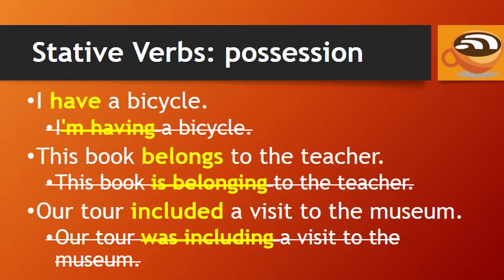Here are some examples of stative verbs with possession. You can say 'I have a bicycle,' but not 'I'm having a bicycle.' Say 'this book belongs to the teacher,' not 'this book is belonging to the teacher.' Our tour included a visit to the museum, not 'our tour was including a visit to the museum.'